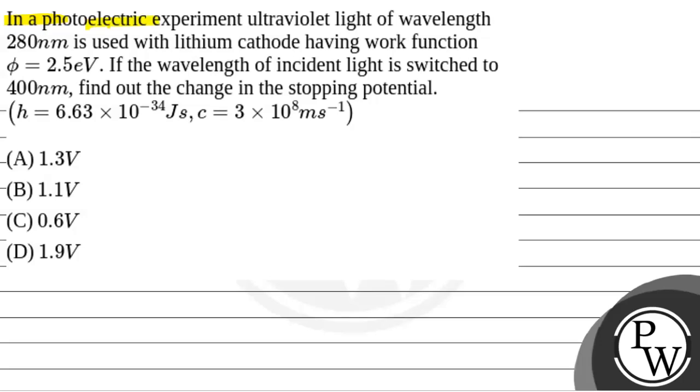The question says that in a photoelectric experiment, ultraviolet light of wavelength 280 nanometers is used with lithium cathode having work function φ equal to 2.5 electron volts. If the wavelength of incident light is switched to 400 nanometers, find out the change in the stopping potential.